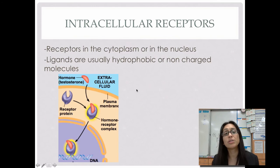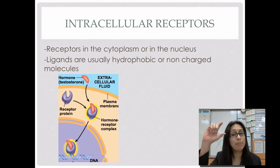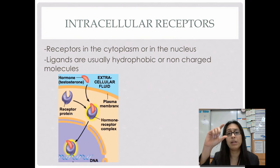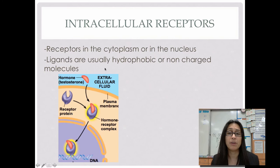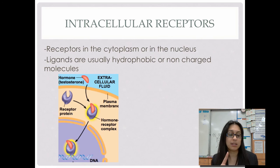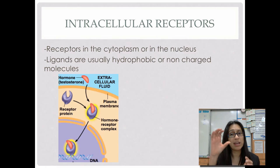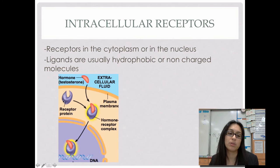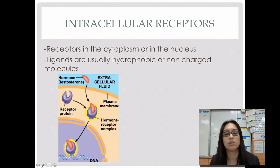The opposite of membrane-bound receptors are intracellular receptors — protein receptors not embedded in the cell membrane, but floating in the cytoplasm or found inside the nucleus. Their ligand or signal molecule can actually pass through the cell membrane because it's either hydrophobic or has no charge. Once that signaling molecule gets in, it binds to the protein receptor, and that starts a signal transduction pathway from there.